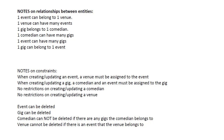With these relationships in place there will be some constraints. When we create or update an event, we must assign a venue to it — we cannot have an event without a venue. Similarly, when we create or update a gig, every gig belongs to a comedian, so we must have a comedian for that specific gig. However, comedians and venues can be created or updated freely with no constraints. When deleting, we can delete an event or gig with no problem, but we cannot delete a comedian if any gig belongs to that comedian, and we cannot delete a venue if any event belongs to that venue.